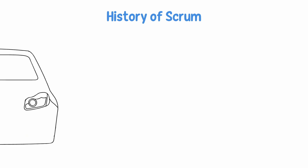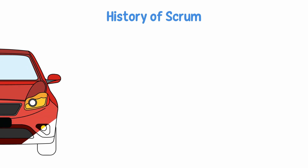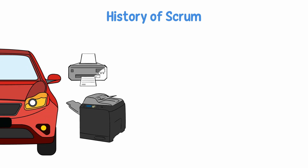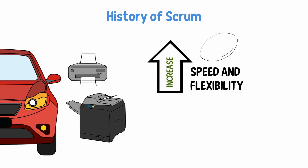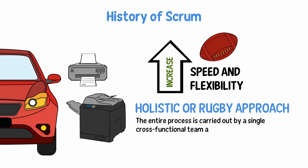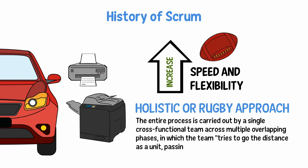Based on case studies from manufacturing firms in the automotive, photocopier, and printer industries, the authors described a new approach to commercial product development that would increase speed and flexibility. They dubbed this the holistic or rugby approach, because the entire process is carried out by a single cross-functional team across multiple overlapping phases, in which the team tries to go the distance as a unit, passing the ball back and forth.